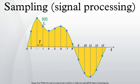The sampling frequency or sampling rate, fs, is defined as the number of samples obtained in one second, thus fs equals 1/T.